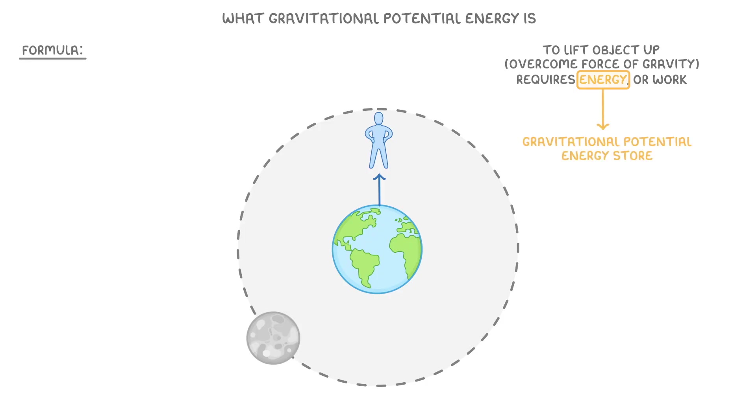The formula for gravitational potential energy, which can be written as Ep, is simply Ep equals mgh, or mass times gravitational field strength times height, with the units being in kilograms, newtons per kilogram, and meters. Gravitational potential energy is a form of energy measured in joules.